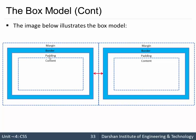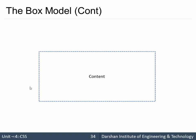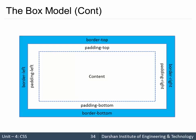We can specify padding the same for all four sides, or we can specify each side separately. For example, if we only want padding on the top side, we can use the property padding-top and set it to 10 or 20 pixels. Similarly, we can specify padding-right, padding-bottom, and padding-left. The same approach applies to border and margin — we can specify top, right, bottom, and left individually.